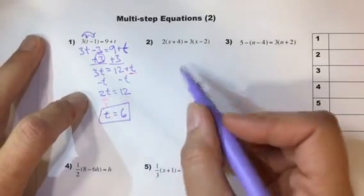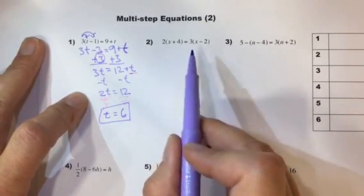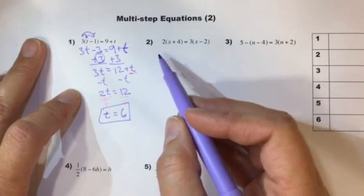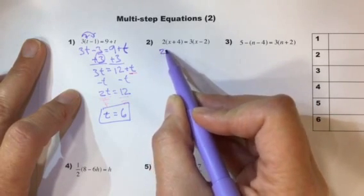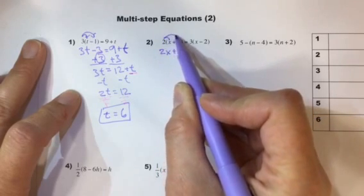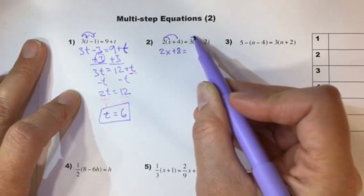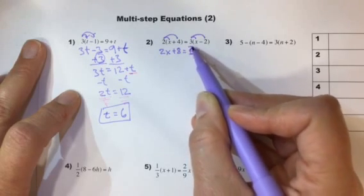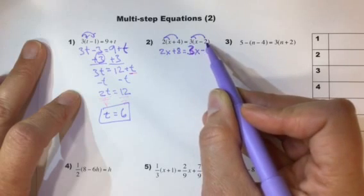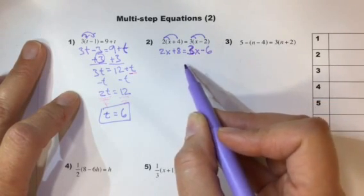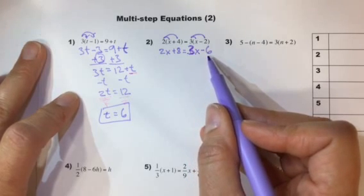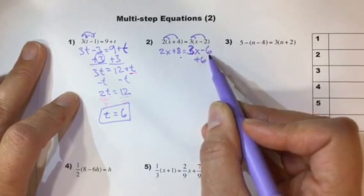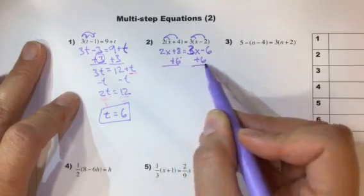Okay with number 2 you have just distribution on both sides. So the first thing you're going to do is do that distribution before you get started in moving around your constants and your variables. So 2x plus 8 because I multiplied 2 by x and 2 by 4 and then on this side I'm going to multiply 3 by x and then 3 by negative 2. So that's 3x minus 6 because 3 times negative 2 is a negative 6. Then I can move my variables around and this time I think it's easier to move the constant over to the left side. So I'm going to add 6 in order to cancel this out and then I add it to the other side because you have to do the same thing to each side in an equation.